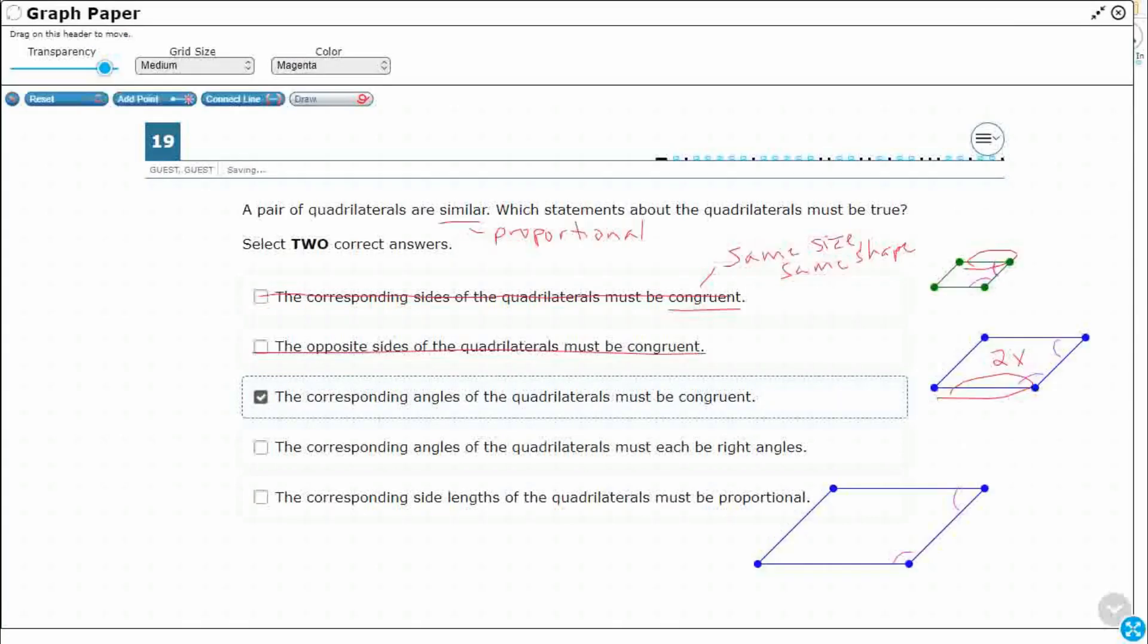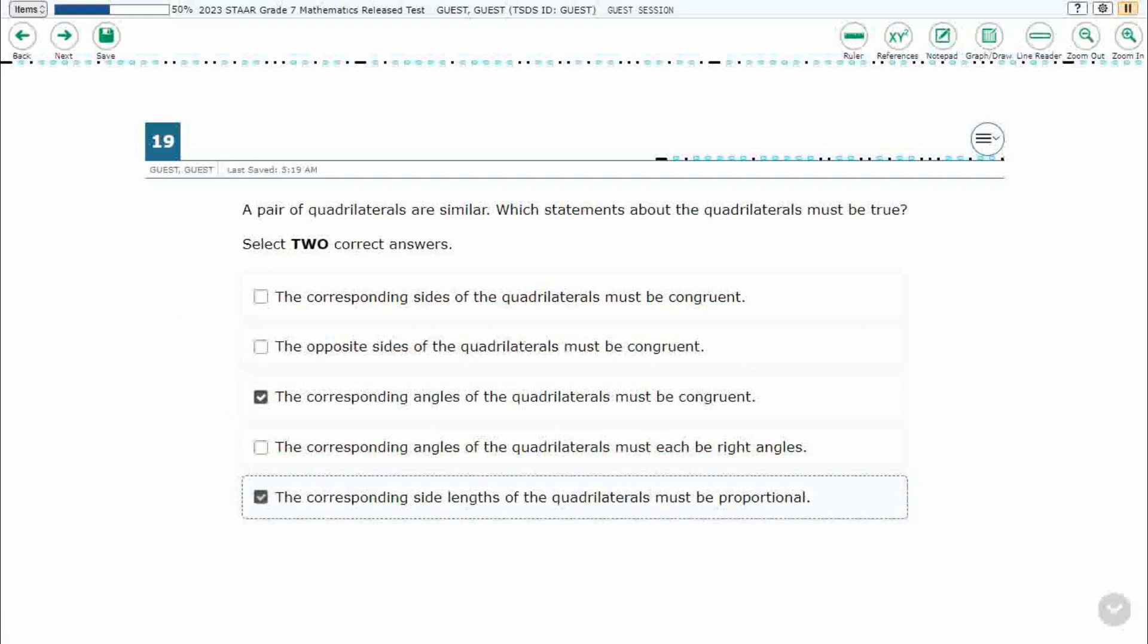So we need one more. The corresponding angles of the quadrilaterals must be right angles. Not necessarily. I could have drawn some squares or some rectangles if I wanted to, but I didn't. Obviously, there's no right angles here. So let's hope it's our last one. The corresponding side lengths, there we go, must be proportional. So that's that key word that we're looking for. The side lengths need to be proportional. So this side length right here is proportional to that one, is proportional to that one, whereas the slanted ones are each going to be proportional to each other. So the angles are congruent, whereas the side lengths are proportional. That's what it means to have similar shapes. So my answer here are the third and the fifth options.